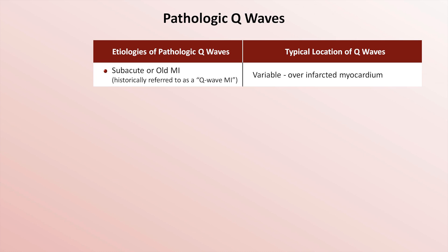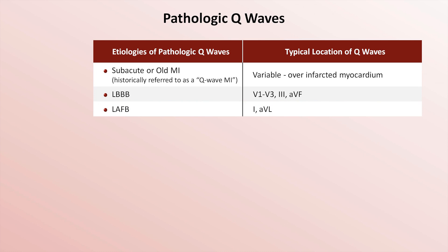The typical location of the Q-waves is over the infarcted myocardium. Next, there are various conduction abnormalities. In a left bundle branch block, pathologic Q-waves are universally present in V1 through V3, as we just saw, and may also be seen in leads 3 and AVF. In left anterior fascicular block, relatively smaller Q-waves are seen in leads 1 and AVL. In left posterior fascicular block, they are seen in leads 2, 3, and AVF.